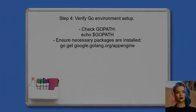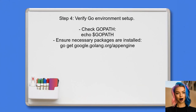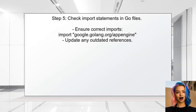If the user continues to experience issues with the GoGet command, they should ensure that their Go environment is set up correctly. This includes checking the GOPATH and ensuring that the necessary packages are installed. Finally, if the user encounters errors related to undefined types, they should confirm that they are importing the correct packages in their Go files. This may involve updating import statements to match the latest package structure.